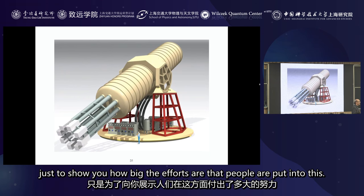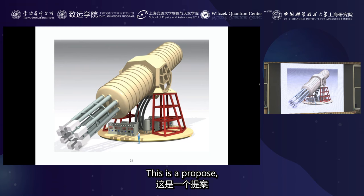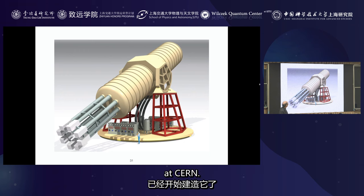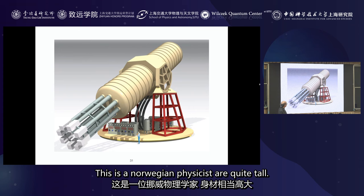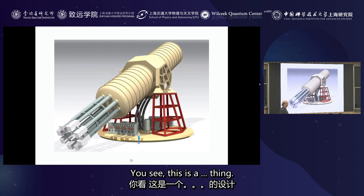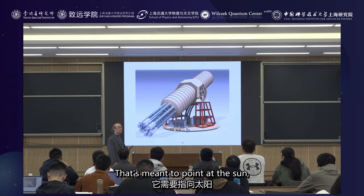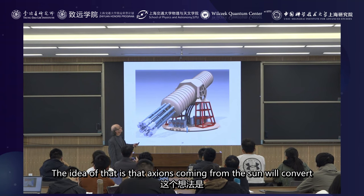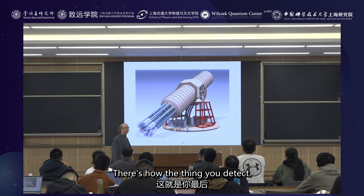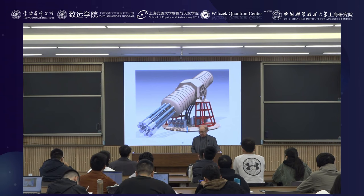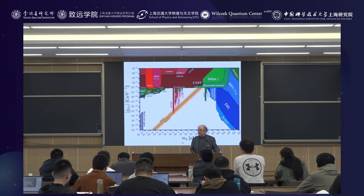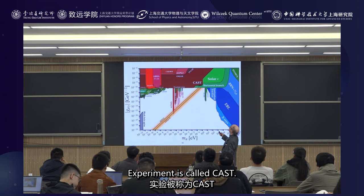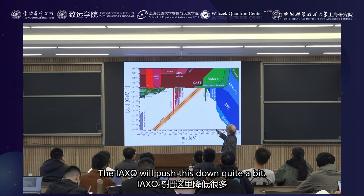Just to show you the scale of effort: this is a proposed — and I think actually being constructed — object at CERN. It's a gigantic thing that has to be movable to point at the sun. It's filled with a gigantic magnetic field. The idea is that axions coming from the sun will convert in that magnetic field into X-rays, which you then detect at the end. This is called the IAXO project. An existing version of that experiment is called CAST, and IAXO will push the sensitivity down quite a bit.